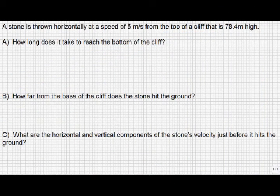In the problem given, a stone is thrown horizontally at a speed of 5 meters per second from the top of a cliff that is 78.4 meters high. First thing I like to do is draw a bit of a picture. What we know is we have a stone going 5 meters per second horizontally that goes off the edge of a cliff, 78.4 meters high, and eventually lands.